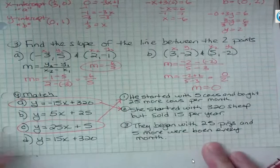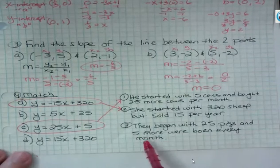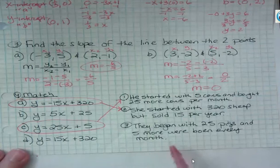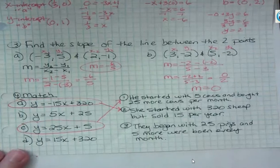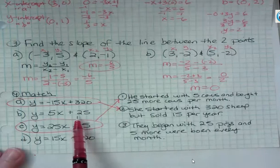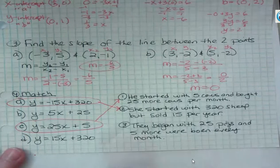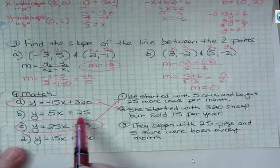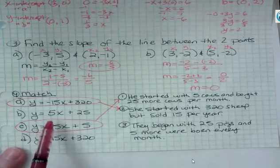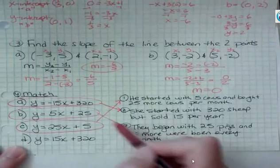And then it becomes a little easier because they began with 25 pigs and they had five more born every month. So she began with 25. So here's 25, her beginning, and then five more per month. Well, this is starting at 320, so that doesn't make any sense. She began with 25 and she gained five every month. So in this case, this one could be described in this way.